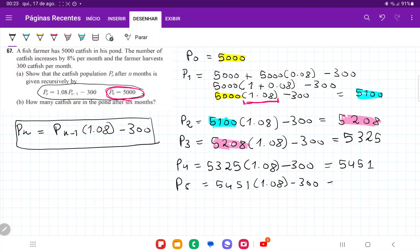And this is going to be, that's going to be 5,587. And lastly, P6, we are going to have here the previous one. So 5,587 times 1.08 minus 300. And that one is going to give us 5,734.